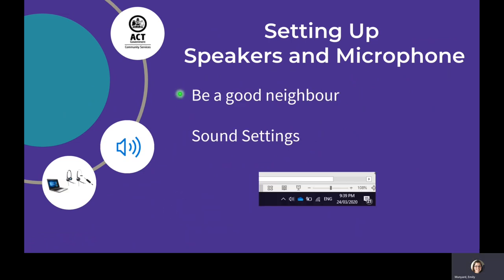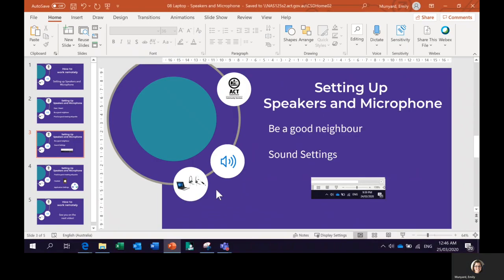We want to be a good neighbour. We want to make sure that we understand where the sounds are coming out of our computer, and to make sure that if we're using a headset, the sounds aren't also coming out of the computer. We're going to do that by accessing the sound settings through the speaker icon on our taskbar. I'm going to take my cursor down to the taskbar and press that speaker.